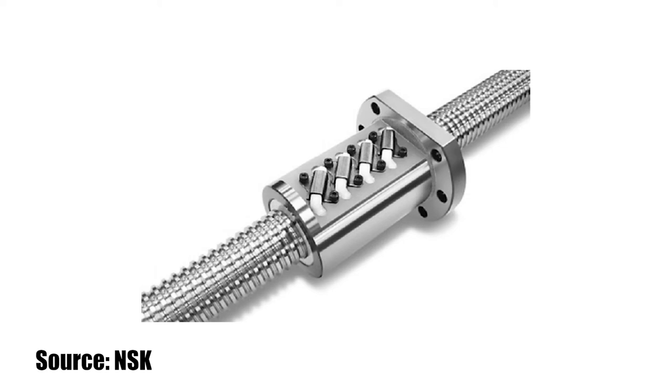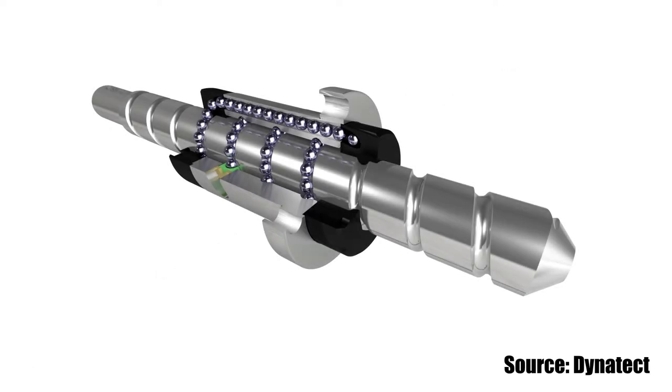For ball screws, maximum speed can also be limited by factors related to the ball nut, specifically by the forces imparted on the balls during recirculation. These forces are determined by the mass of the balls and their speed as they travel through the nut, which depends on the ball nut design and the ball return method. The maximum speed due to the ball nut is known as the characteristic speed. Ball nuts with internal ball recirculation paths typically have higher characteristic speeds than ball nuts with external return circuits.